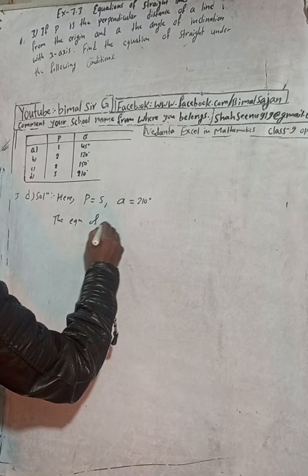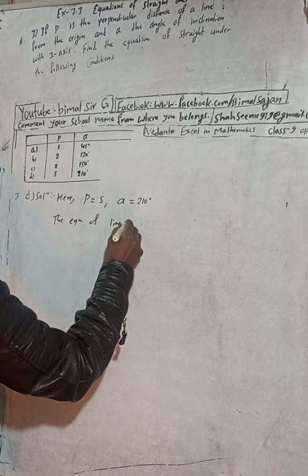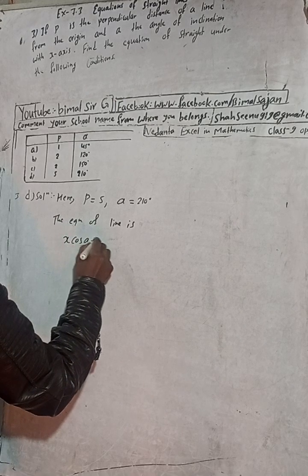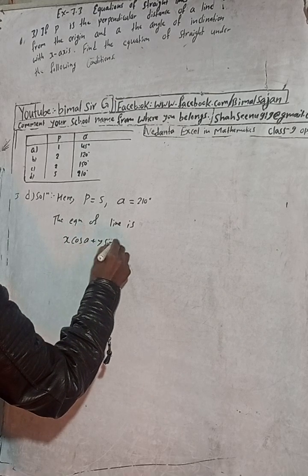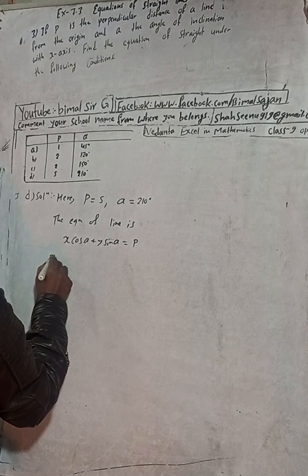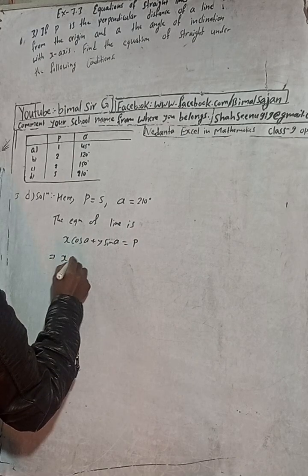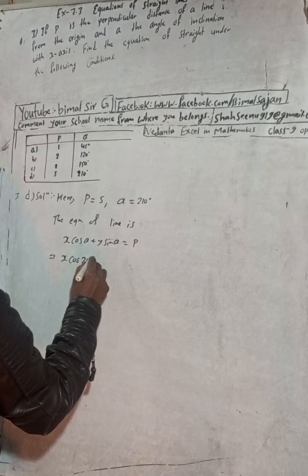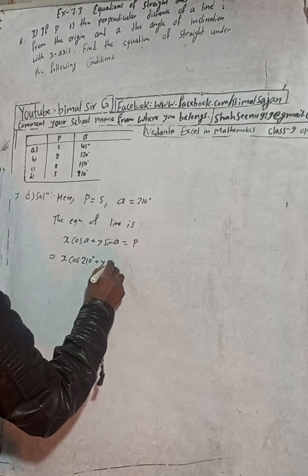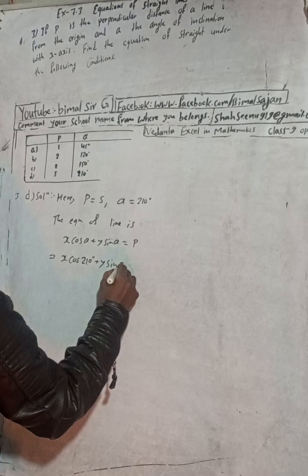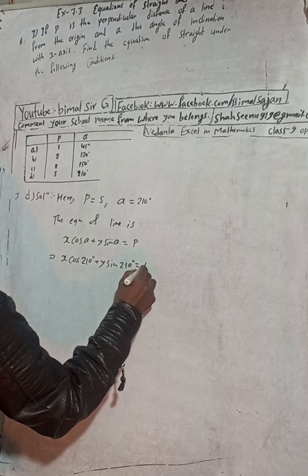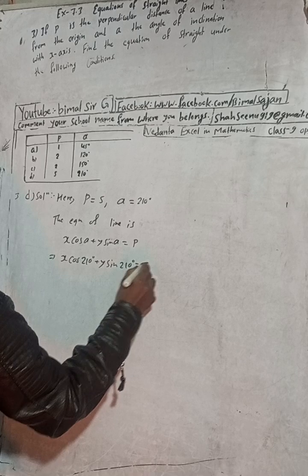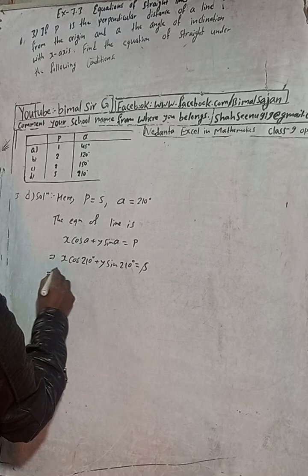The equation of line is x cos alpha plus y sin alpha equals P. Now it looks as x cos alpha, here 210 degrees, plus y sin alpha, 210 degrees, is equal to P value which is 5.